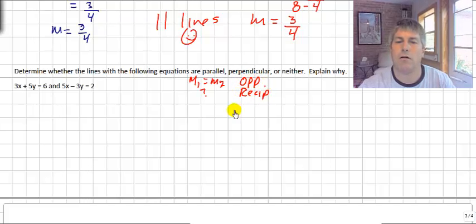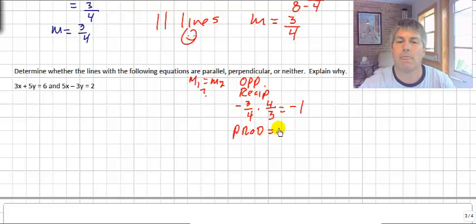You might recall opposite reciprocals. Let's take a look at a couple slopes that might be opposite reciprocals. I'll give you a little helpful hint here. Negative 3-fourths and the opposite reciprocal are 4-thirds. If we multiply those two together, we get negative 1. So if we take the product of the slopes, if the product equals negative 1, then we will have perpendicular lines. Or it could be neither.